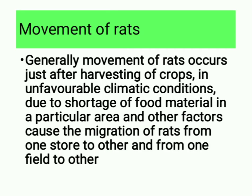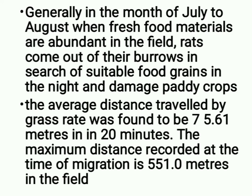Movement of rats: generally, movement of rats occurs just after harvesting of crops. In unfavorable climatic conditions, due to shortage of food material in a particular area, rats migrate from one store to another and from one field to another. Generally in the month of July to August, when fresh food materials are abundant in the field, rats come out of their burrows in search of suitable food grains at night and damage paddy crops. The average distance traveled by grass rat was found to be 75.61 meters in 20 minutes. The maximum distance recorded at the time of migration is 551.0 meters in the field.